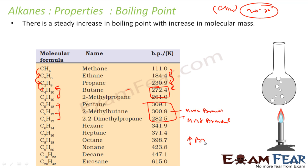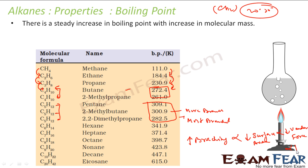More branching implies less surface area, and less surface area implies less van der Waals force, which implies a lower boiling point. So more branching → less surface area → less van der Waals force → less boiling point.